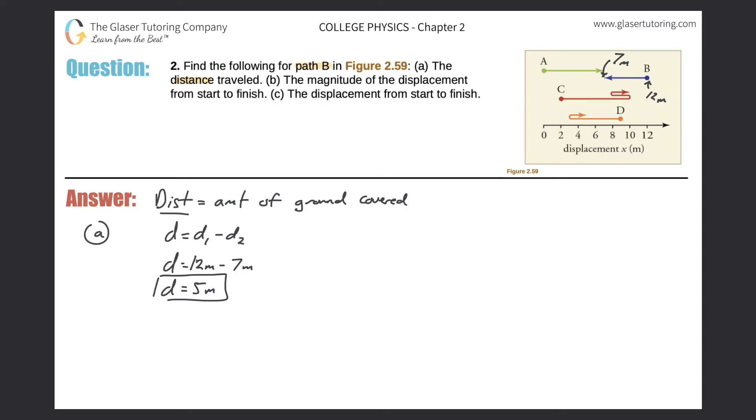Let's take a look now at part B. The magnitude of the displacement from start to finish. Recall that B is starting at 12 meters and ending at 7 meters. Let's write down our displacement formula. The change in displacement equals the final displacement minus the initial displacement.